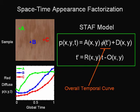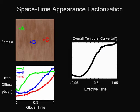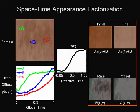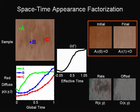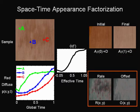Spatial patterns and differences are due to the different points evolving at different rates. The STAF model estimates an overall temporal variation curve and four spatially dependent textures that determine the initial and final appearance, as well as the rate of drying, R, and the offset, O.